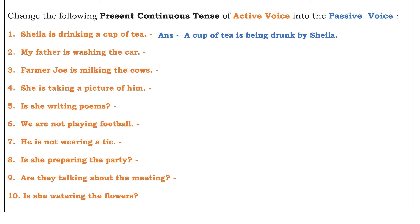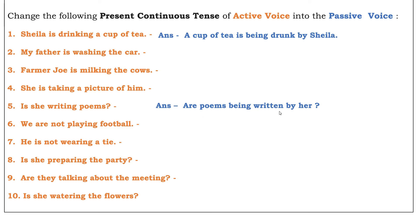Look at number five: 'Is she writing poems?' The subject is 'she,' the verb is 'writing,' and the object is 'poems.' 'Poems' is plural, so we use 'are.' This is in the interrogative form, so the auxiliary verb 'are' comes in front. The answer is: 'Are poems being written by her?' That was quite simple if you are listening and paying attention to the lectures.